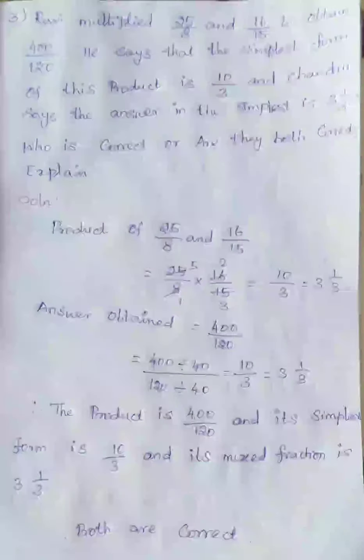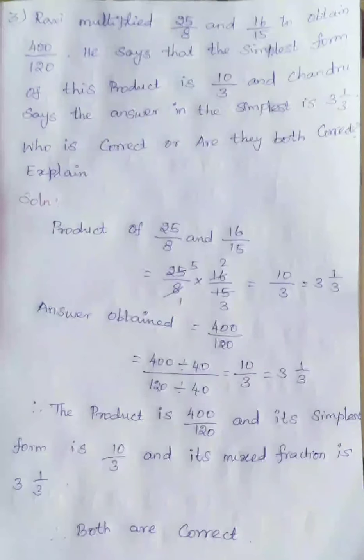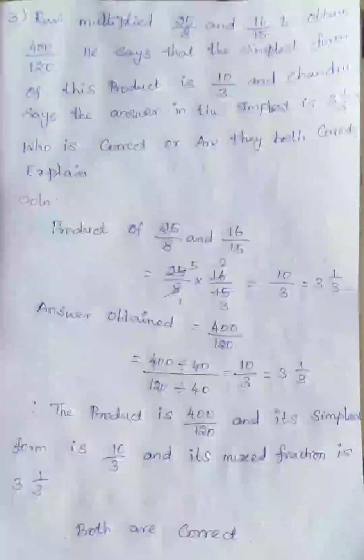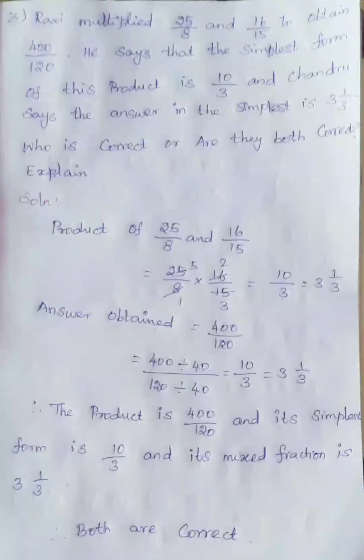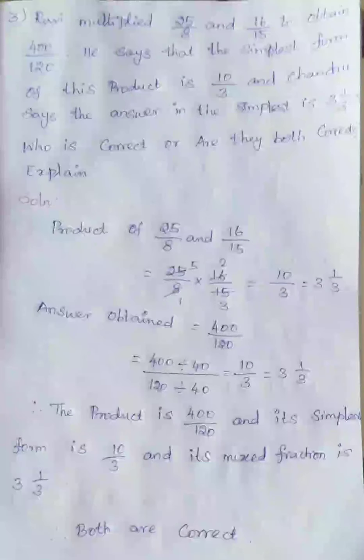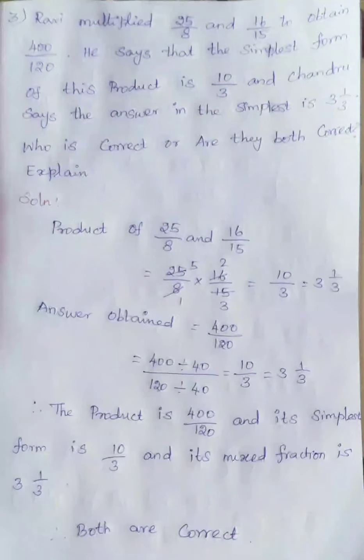Ravi multiplied 25 by 8 and 16 by 15 to obtain 400 divided by 120. He says that the simplest form of this product is 10 by 3, and Chandru says the answer in the simplest form is 3 into 1 by 3.